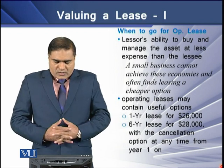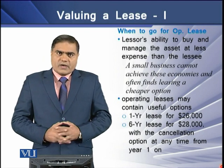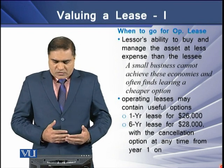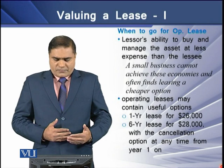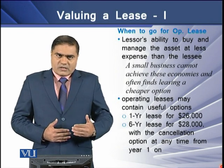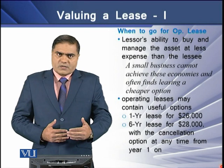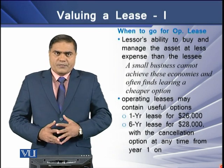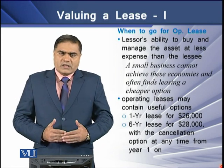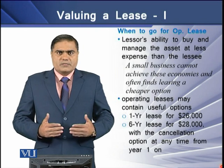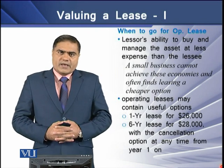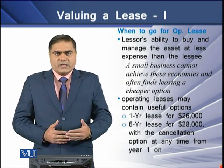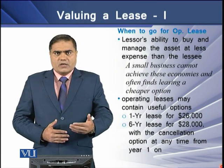Also, an operating lease may contain certain useful terms that can be used for final decision making. For example, there is a one-year lease for $25,000 and a six-year lease for $28,000 with cancellation options if the lessee finds the lease expensive — the option can be exercised after one year and onward. In these two examples, the second seems better as the lessee has the option of cancelling the lease if it finds the lease onerous for its business.